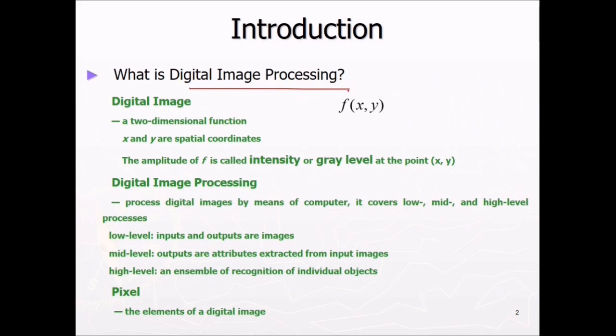What is digital image processing? Let us discuss first what is digital image. We represent digital image by f(x, y). It's a two-dimensional function. Digital image is a two-dimensional function means two dimensions and this x and y are actually the spatial coordinates, any point at x direction, y direction.